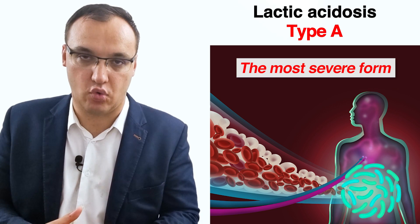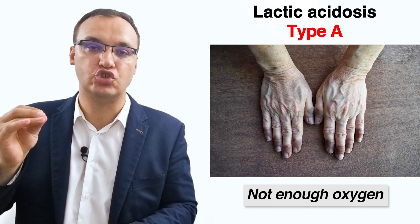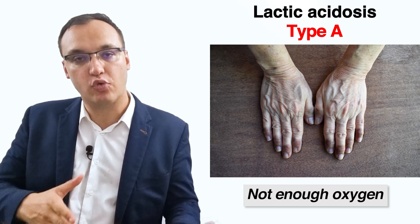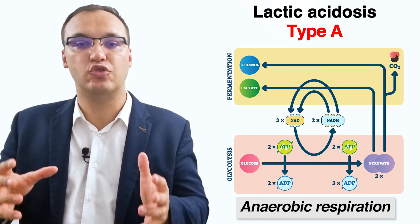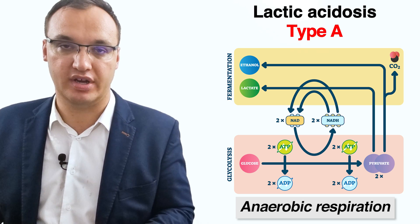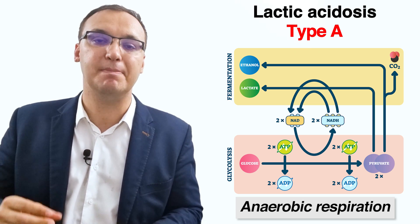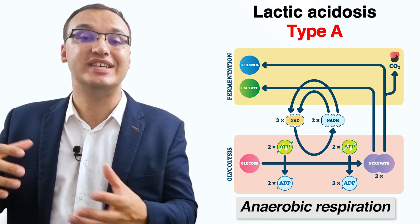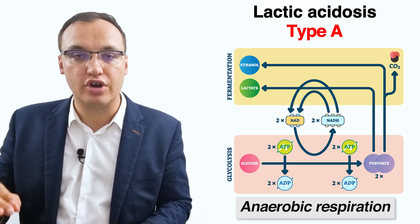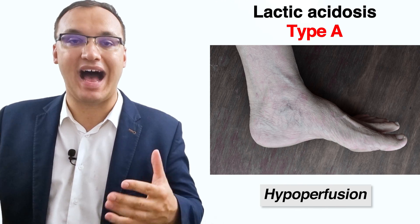Type A is the most severe form. It is associated with impaired tissue oxygenation, meaning your body muscles and tissues are not receiving enough oxygen. Therefore, these muscles and tissues have to break down glucose through an alternative metabolism known as anaerobic respiration, which produces energy. Anaerobic respiration is simply defined as glucose breakdown for energy without the use of oxygen, and it produces lactic acid rather than carbon dioxide and water.